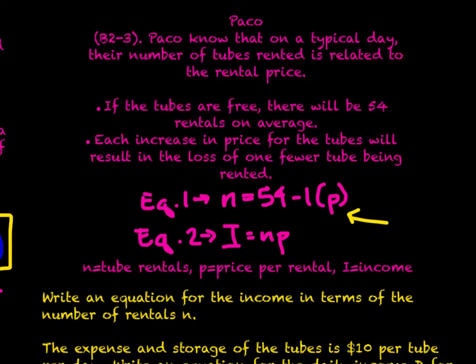Paco knows that on a typical day, the number of tubes rented is related to the rental price. Number 1, if the tubes are free, there will be 54 tubes rented on average. With each $1 increase in price, the tubes will result in a loss of one tube being rented. So our first equation is: the number of tube rentals equals 54 minus 1 times the price per rental. Essentially this is telling me for every time the dollar value increases, we will see a decrease in the rental.